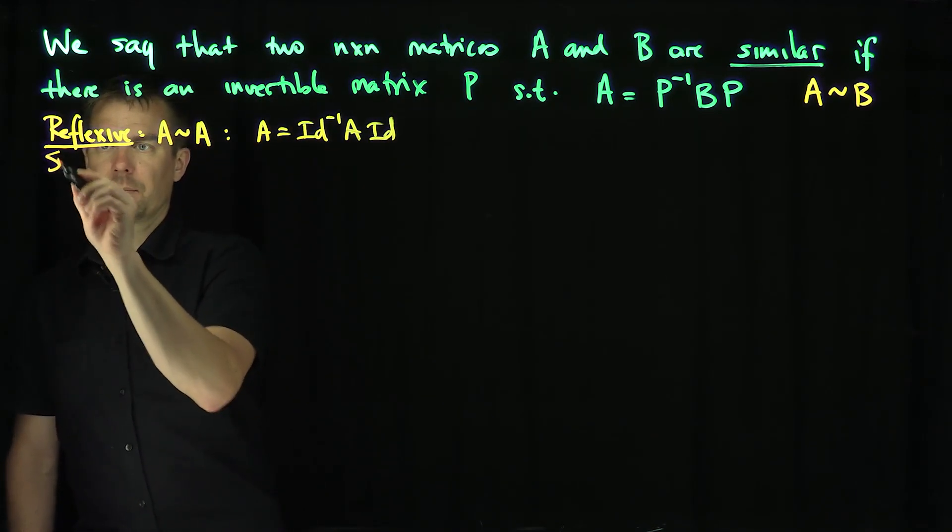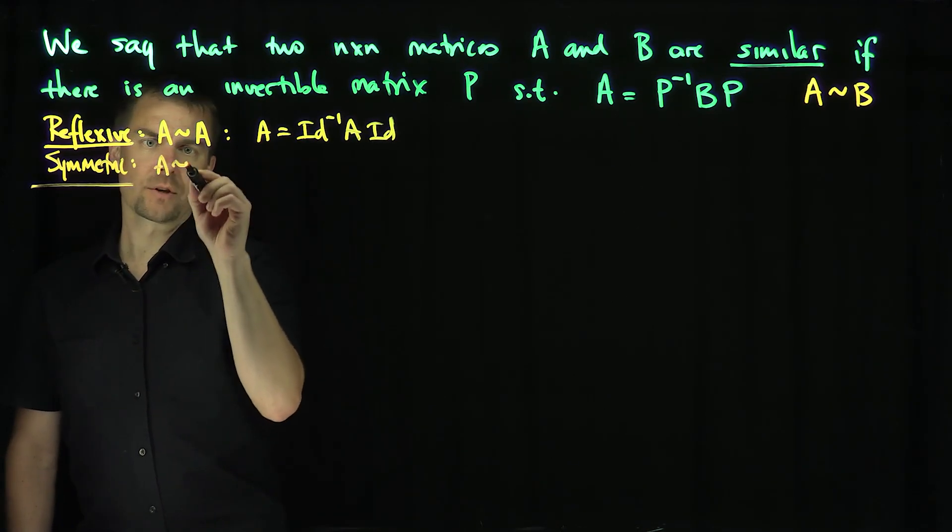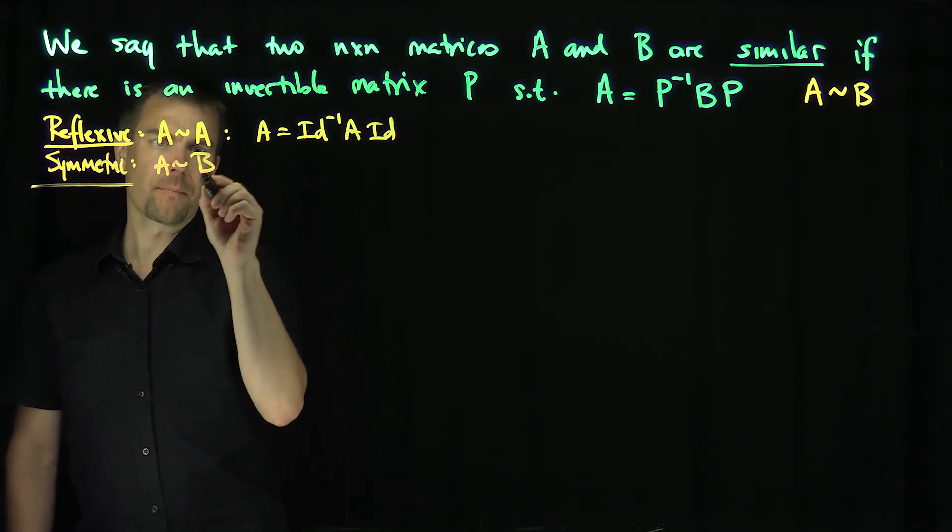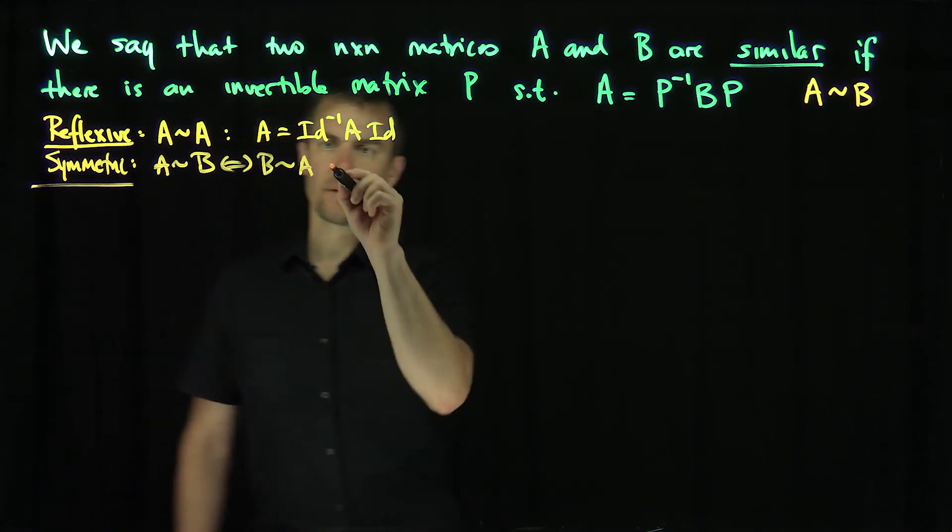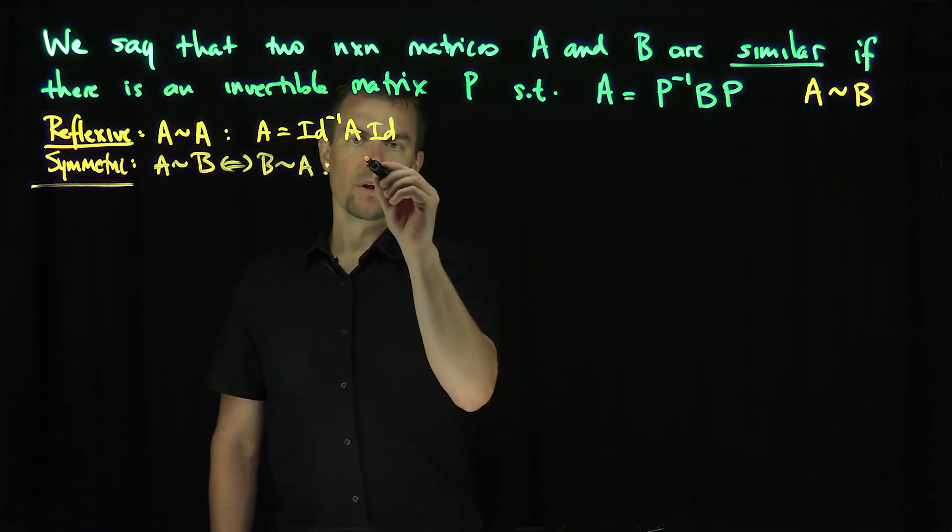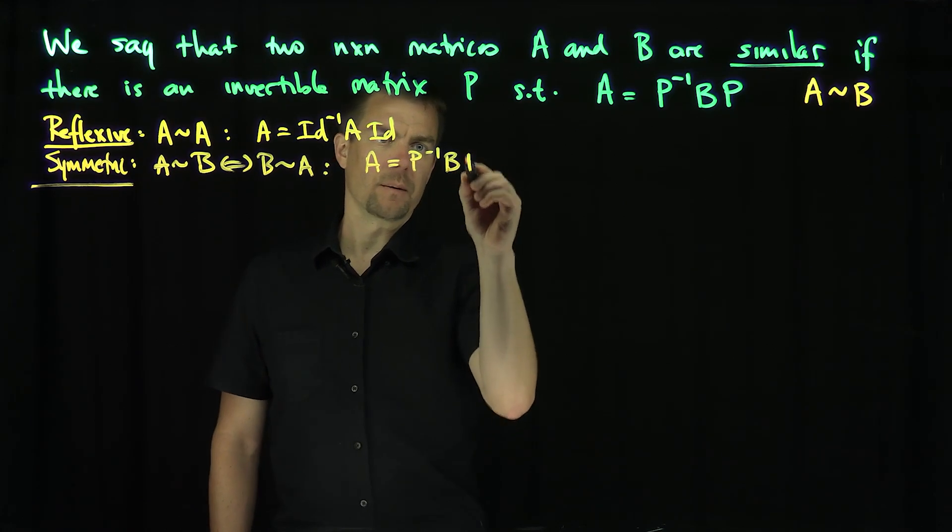It's symmetric. So if A is similar to B, then if and only if B is similar to A. How do you prove that? Well, if A is similar to B, that says that A equals P inverse B P,